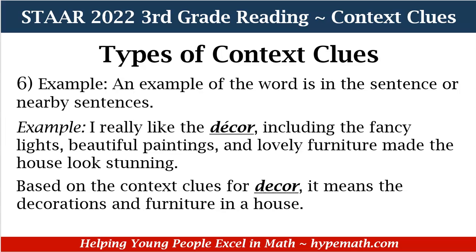The next type is example — an example of the word is given in the sentence or nearby sentences. Our sample sentence: 'I really like the decor, including the fancy lights, beautiful paintings, and lovely furniture, made the house look stunning.' Based on the context clues for decor, it means the decorations and furniture in a house. The sentence first mentions the decor, then lists what parts of it they liked, so it gives an example.